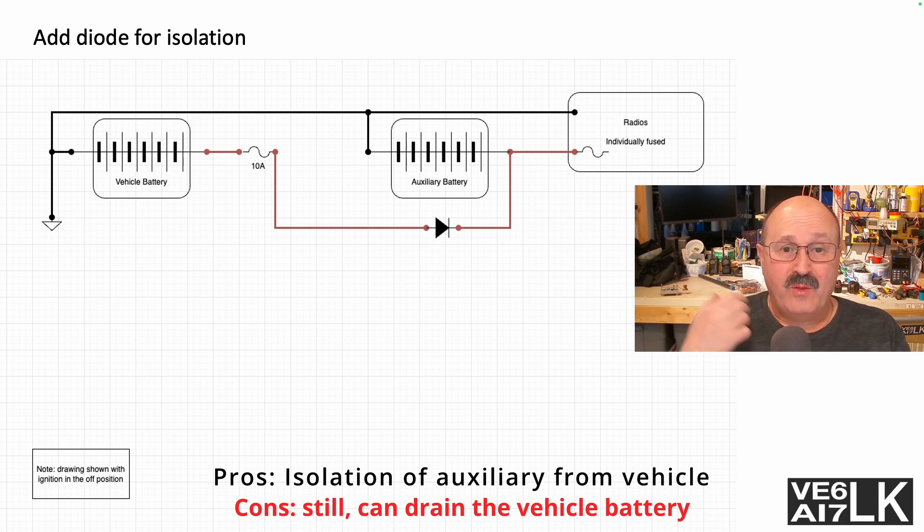So now this solves the problem of the auxiliary battery not trying to backfeed into your vehicle battery, but it doesn't solve the problem of if the auxiliary battery gets drained because you leave your radios on, you're still draining your main vehicle battery.